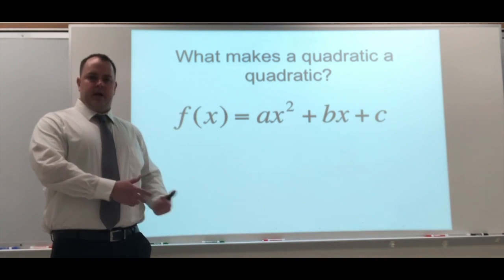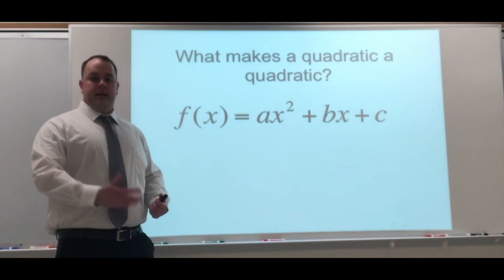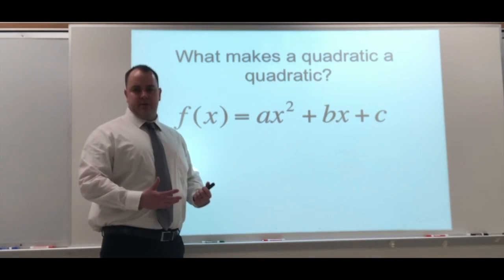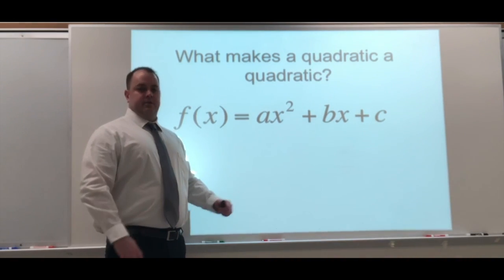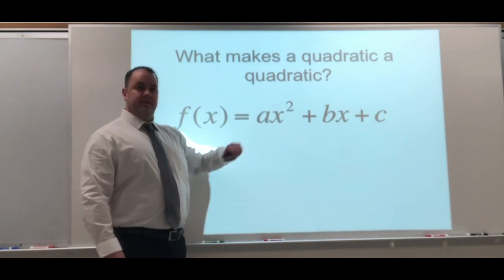Everything we dealt with so far in chapters one, two, and three were linear equations. There was no exponent, or at least you didn't see the exponent because you don't put the exponent when it's a one. Here, we have a degree of two, and that's what makes it a quadratic.